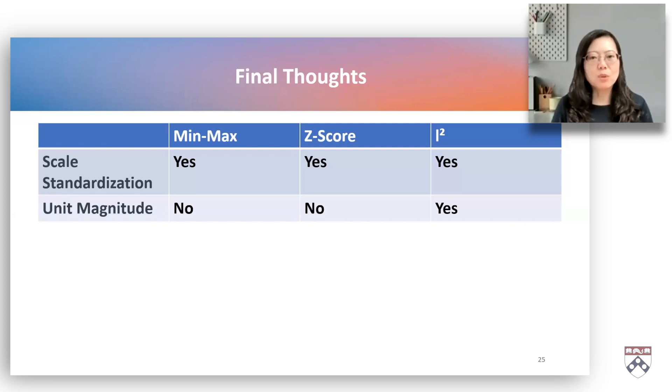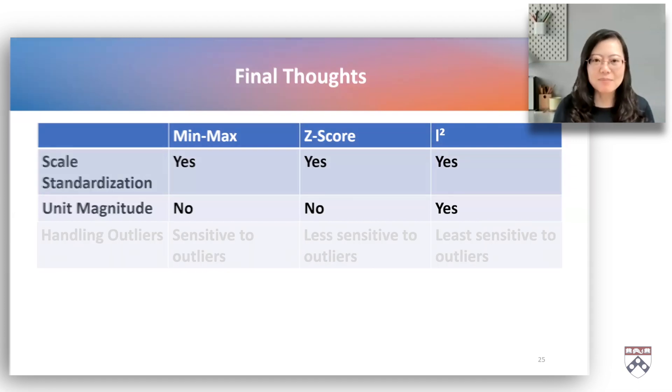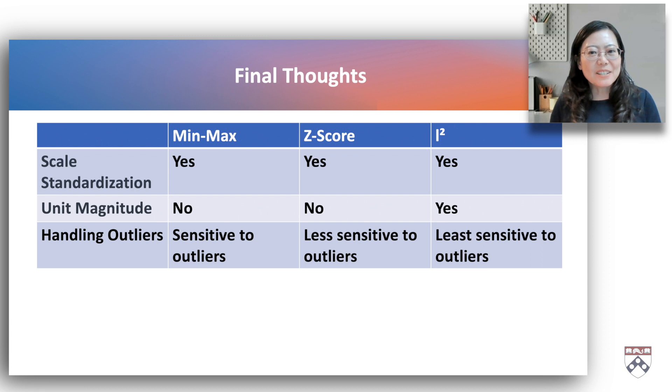However, z-score centers data around a mean of 0 and scaling by the standard deviation. Handling outliers: min-max normalization is sensitive to outliers as extreme values can disproportionately influence the scaling. Z-score normalization is more robust to outliers due to its reliance on the mean and standard deviation. L2 normalization considers the overall distribution and is generally less affected by outliers.